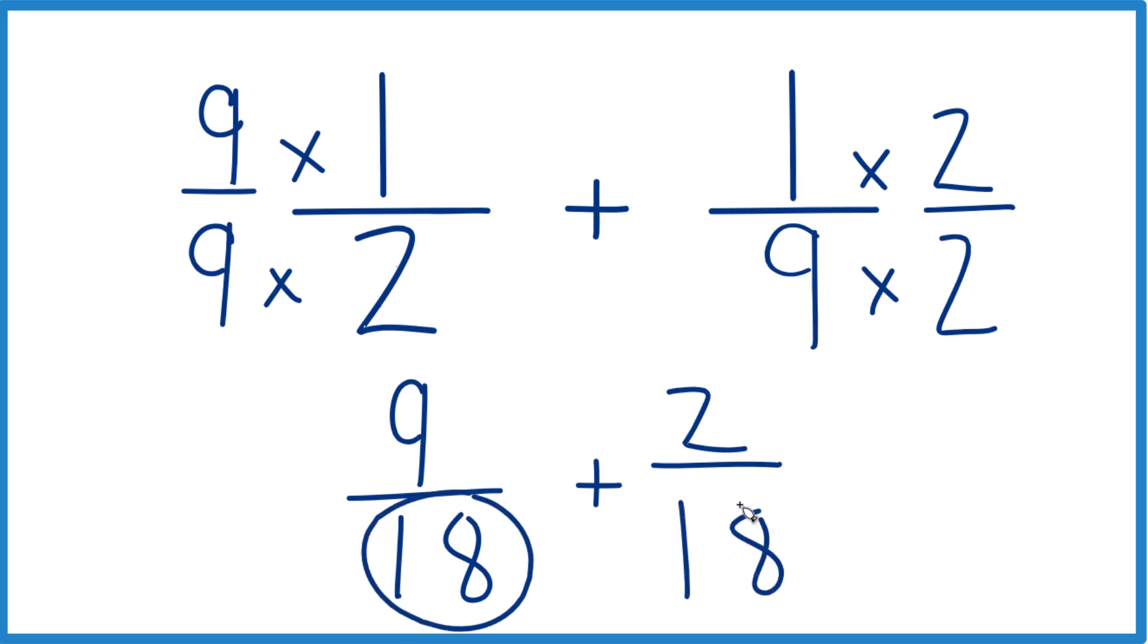So now we have the same denominator. We can just add the numerators. Let's see, 9 plus 2 is 11. We bring the 18 across. And 1 half plus 1 ninth equals 11 eighteenths. So that's how you do it.